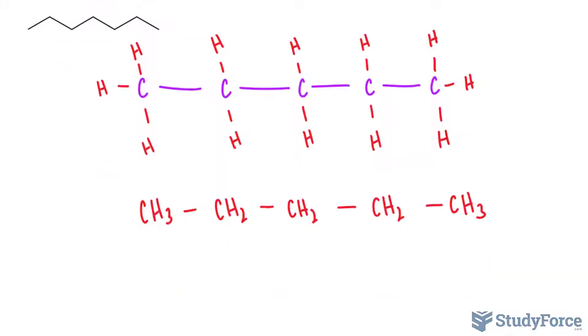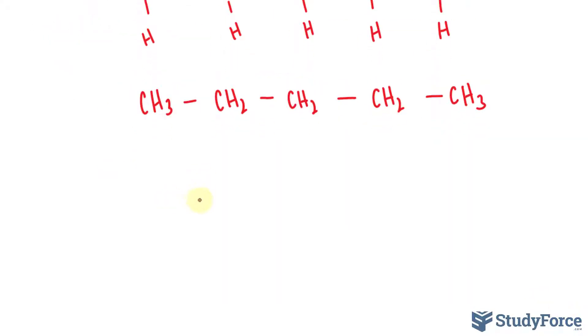And the line angle structure, each vertex and end represents a carbon. So that's a carbon, carbon, carbon, another one, and a fifth one. And we assume that we have hydrogens in the exact same places as they were in the other structures.